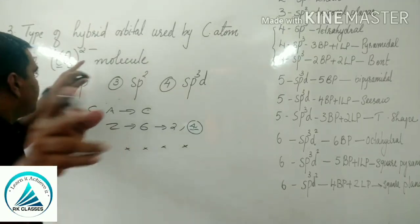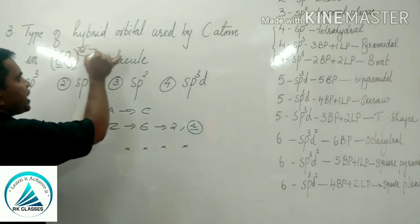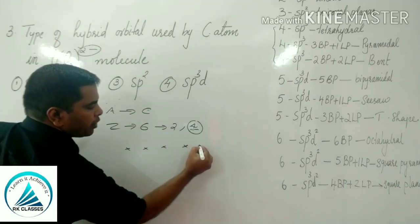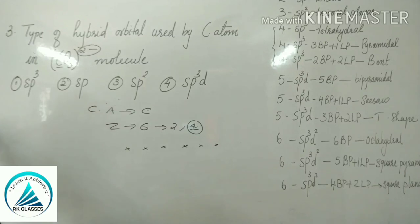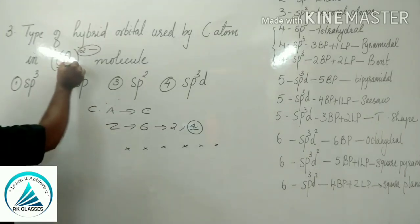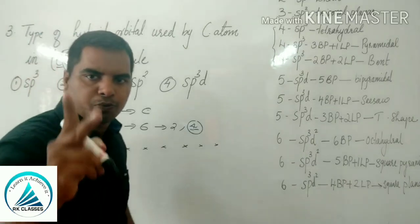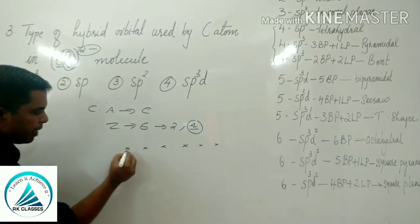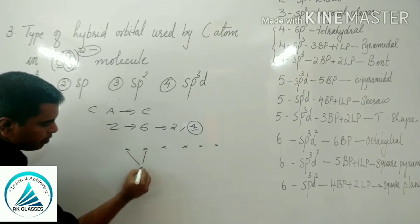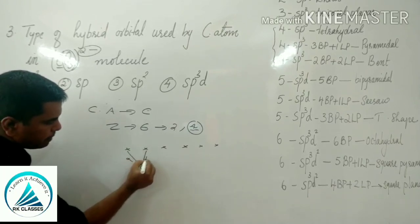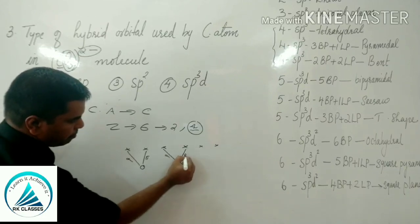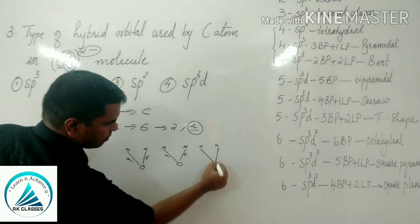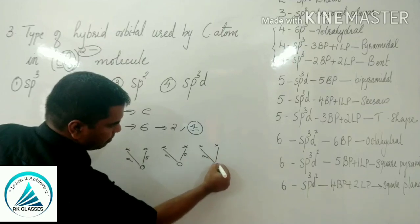Remember, CO3 2- has 2 negative charges, so we add 2 more electrons to carbon's valence shell. There are 3 oxygen atoms, and oxygen is bivalent — it can make 2 bonds: one sigma bond and one pi bond.